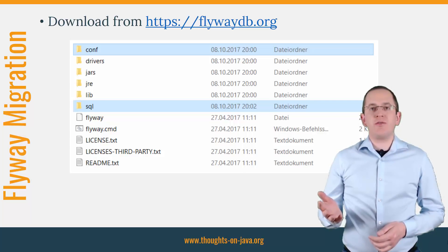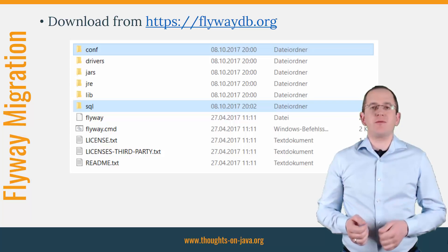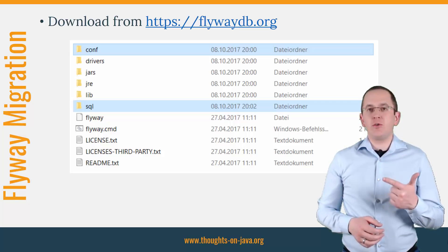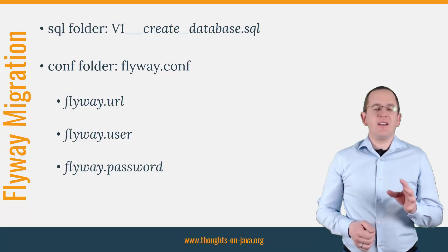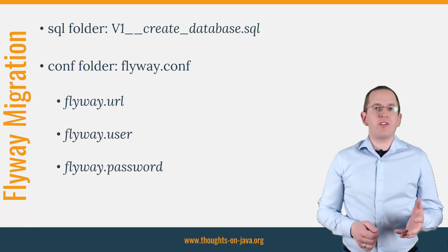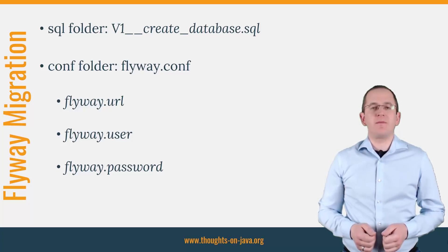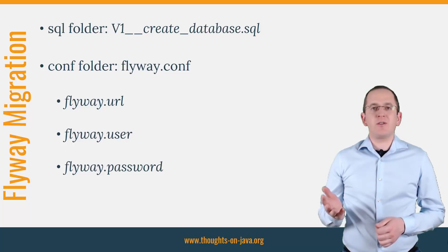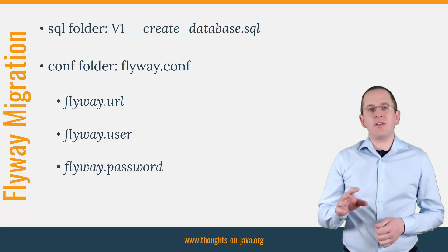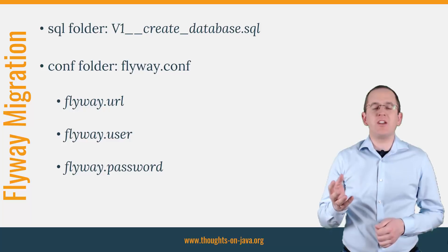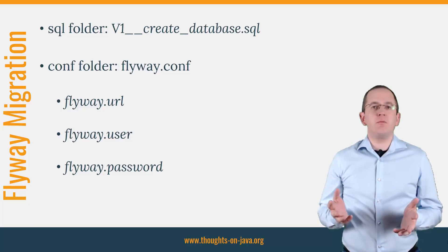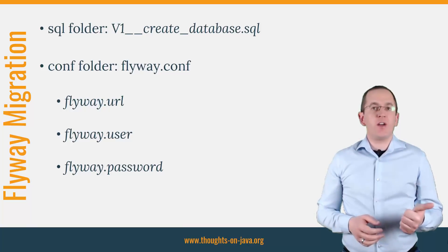After that, you should find the following files and folders on your hard drive. In this guide, you just need the two selected folders: CONF and SQL. In its default configuration, Flyway processes all SQL files located in the SQL folder, so you should put your V1 createDatabase SQL file there. The CONF folder contains the flyway.conf configuration file, which contains lots of comments documenting all configuration parameters in great detail. I will only point out the most important ones: flyway.url, flyway.user, and flyway.password.